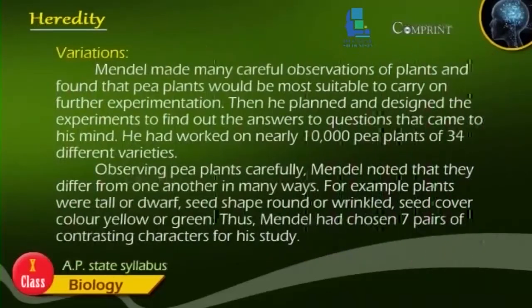Mendel planned and designed experiments to find answers to questions that came to his mind. He had worked on nearly 10,000 pea plants of 34 different varieties. Observing pea plants carefully, Mendel noted that they differ from one another in many ways. For example, plants were tall or dwarf, seed shape round or wrinkled, seed cover color yellow or green. Thus, Mendel had chosen seven pairs of contrasting characters for his study.